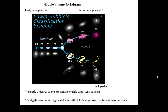There is some debate as to which galaxies are older and which are younger. It is now thought that spiral galaxies are younger because they contain more regions of star birth, whereas elliptical galaxies contain more older stars. When we look at the older universe we see more spiral-type galaxies, so scientists now believe that spiral galaxies are younger than elliptical galaxies.